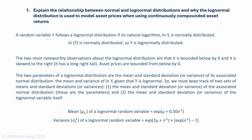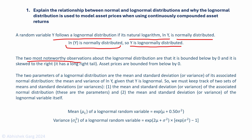A random variable y follows a log normal distribution if its natural logarithm ln(y) is normally distributed. So if ln(y) is normally distributed, we can say that y is log normally distributed. There are two most important observations about a log normal distribution: it is bounded below by zero — ln(y) will always be greater than or equal to zero — and it is skewed to the right, meaning the distribution has a long right tail.